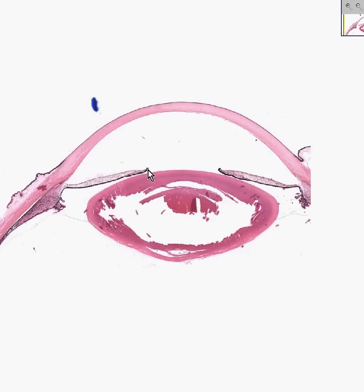Here is the pupil, which is the space between the two tips of the iris. Here is the iris. Here is the cornea. Here is the sclera. Here is the ciliary body. Here are ciliary processes.